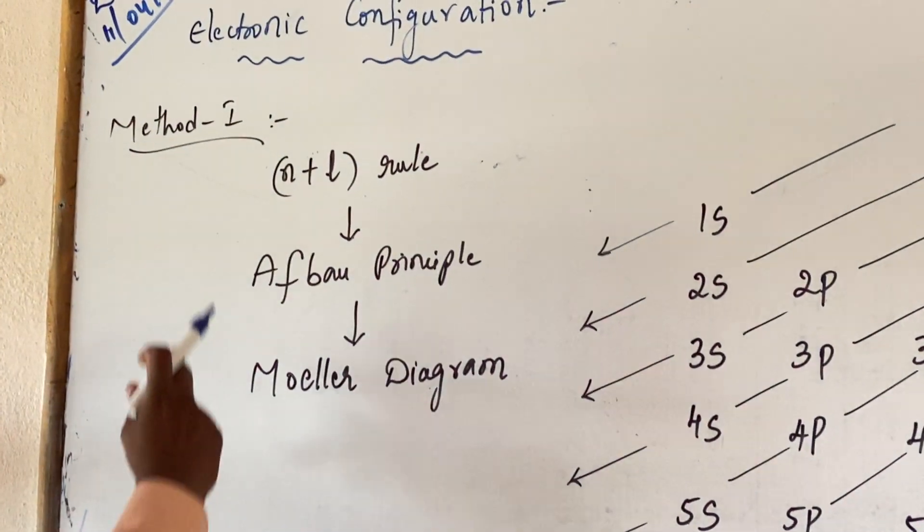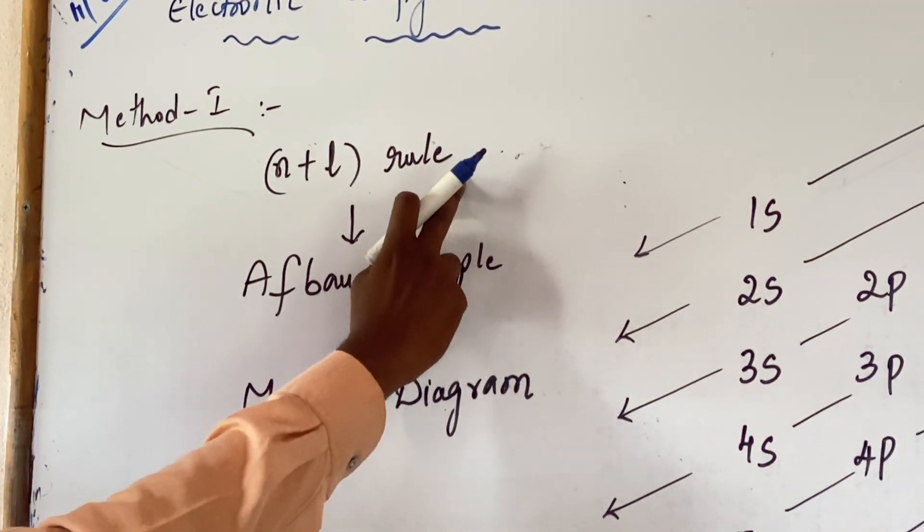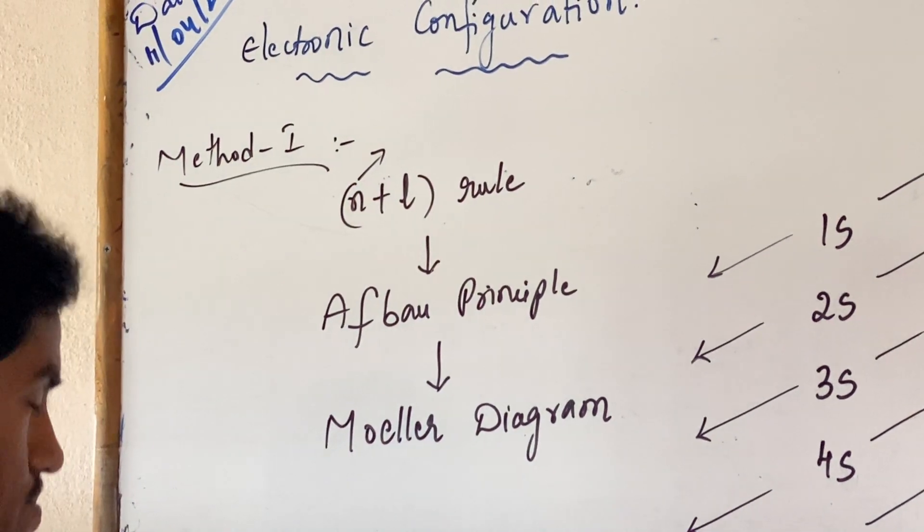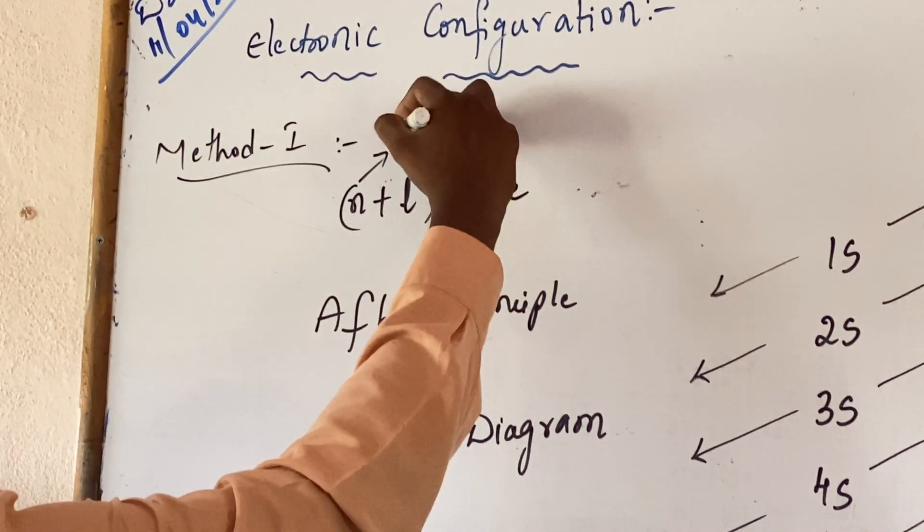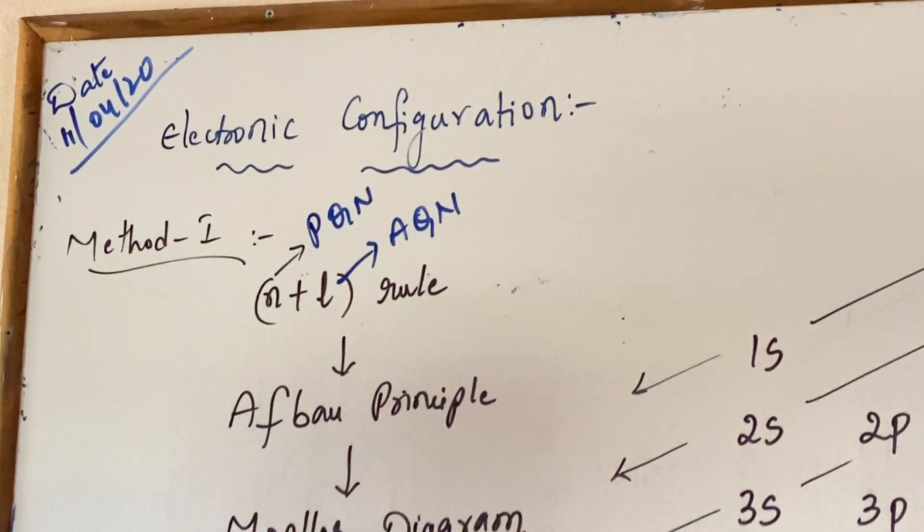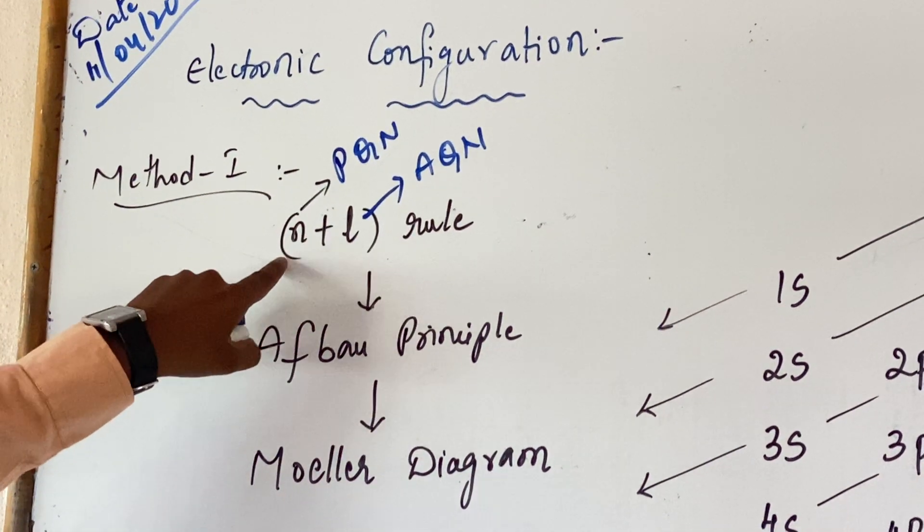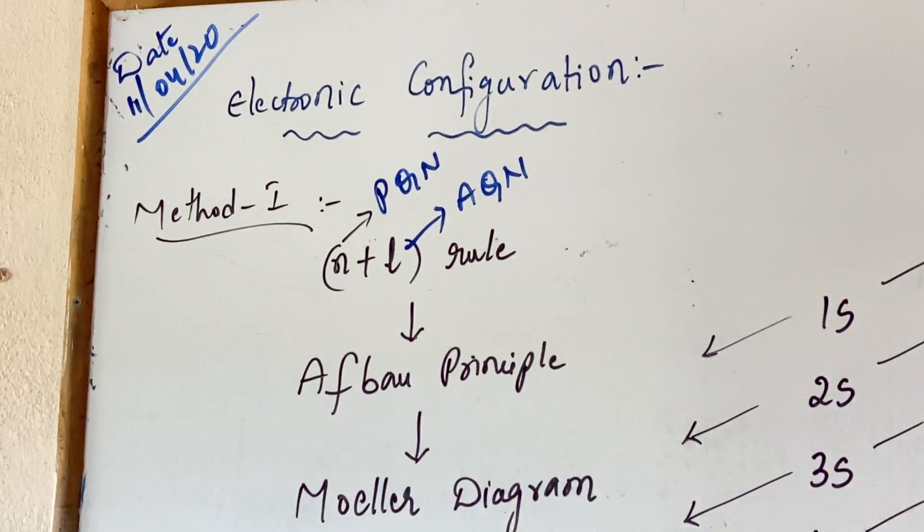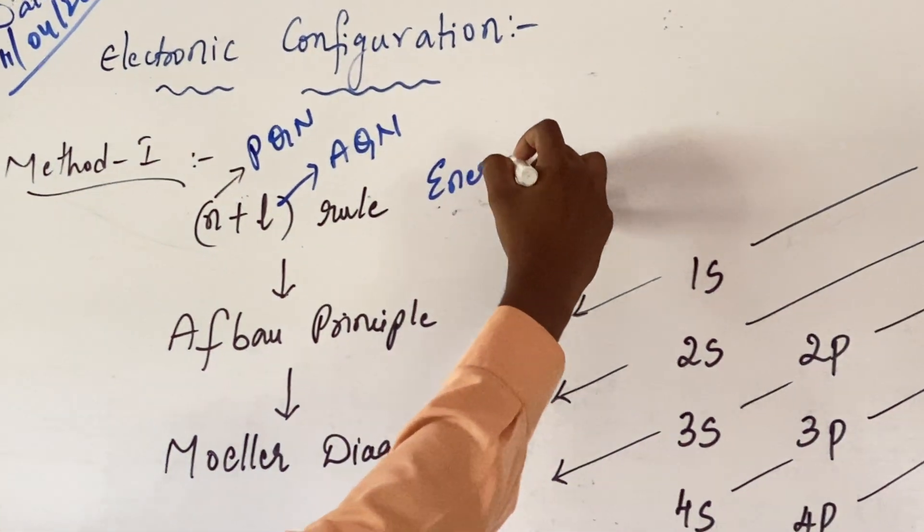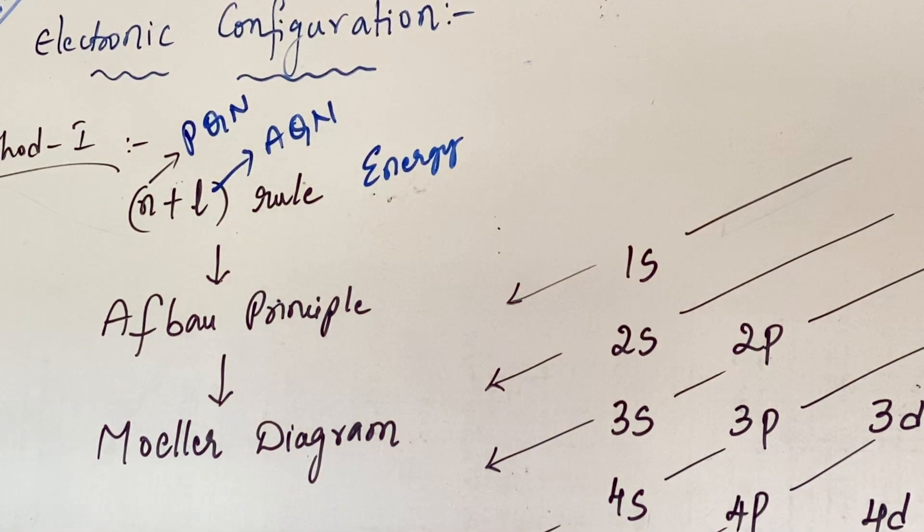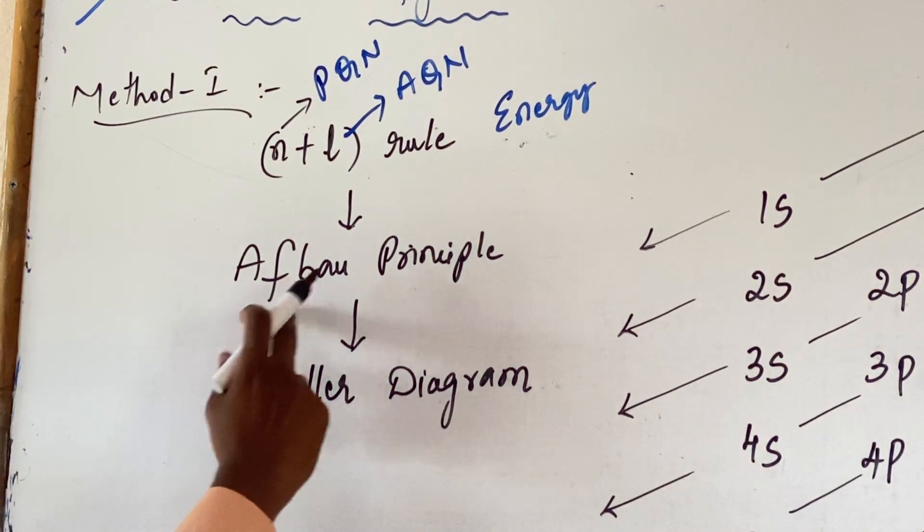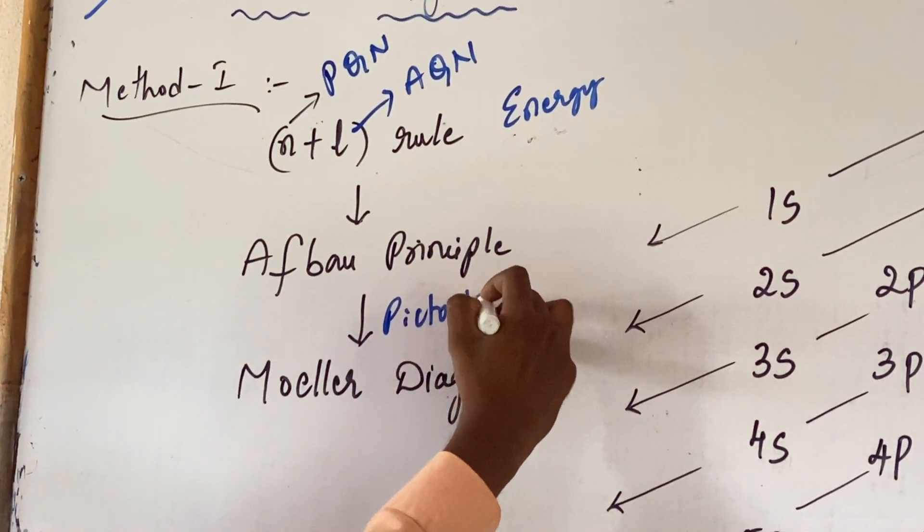Among them the first method is N plus L. Now what is called N? N represents here principal quantum number and L represents azimuthal quantum number. N plus L rule, it defines the energy of the available orbital. The definition was given by Aufbau principle. Aufbau principle pictorial representation is Moeller diagram.